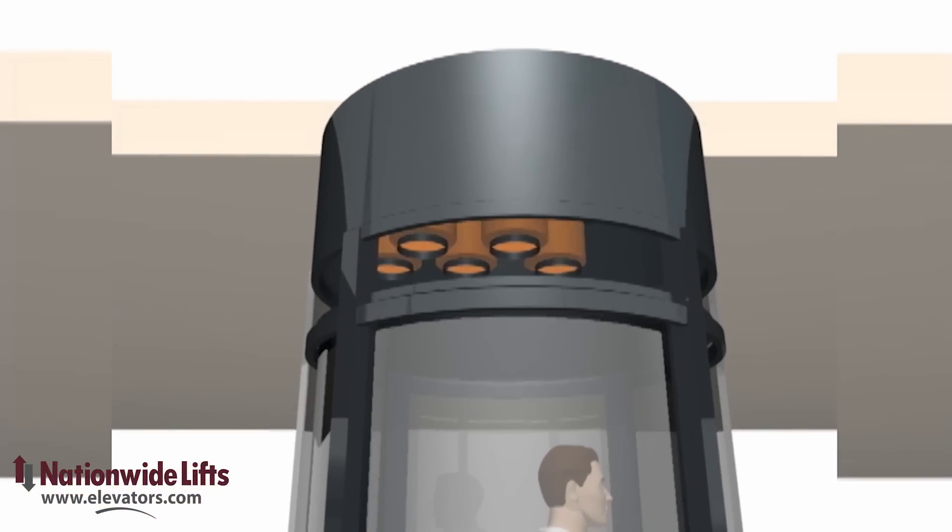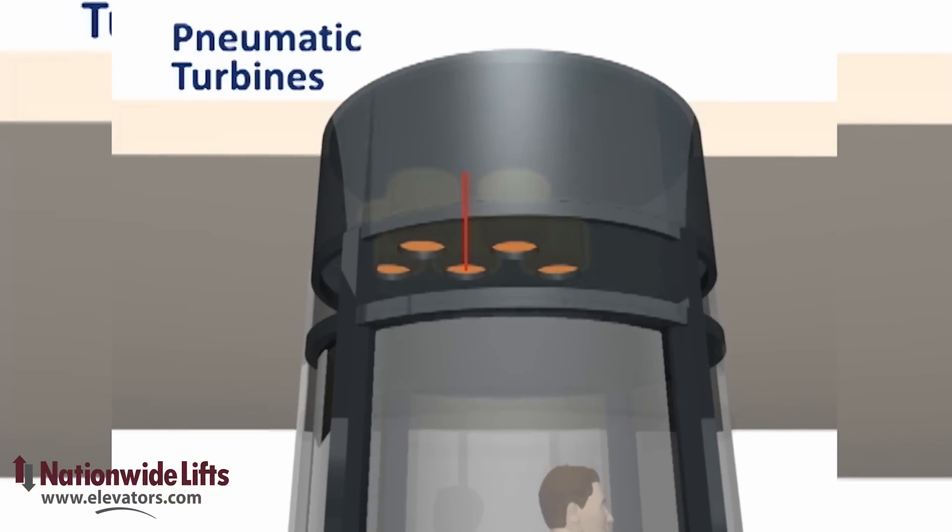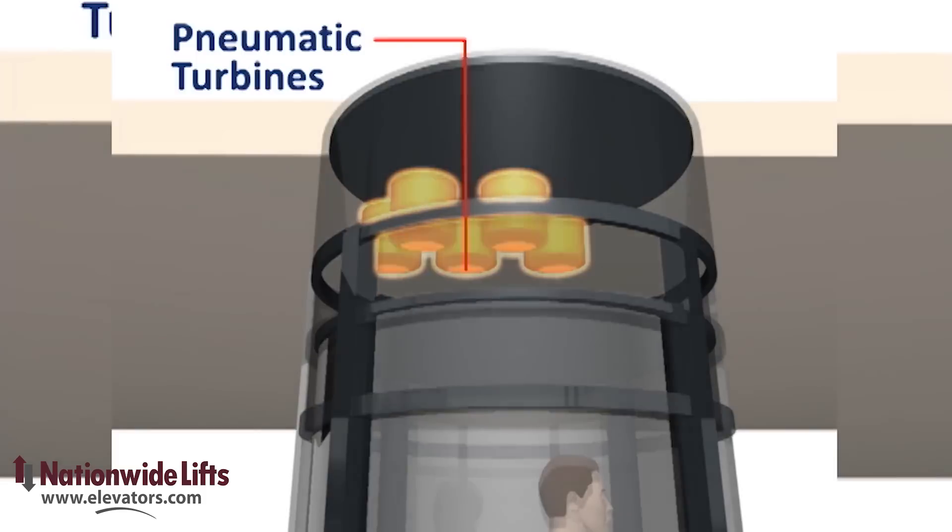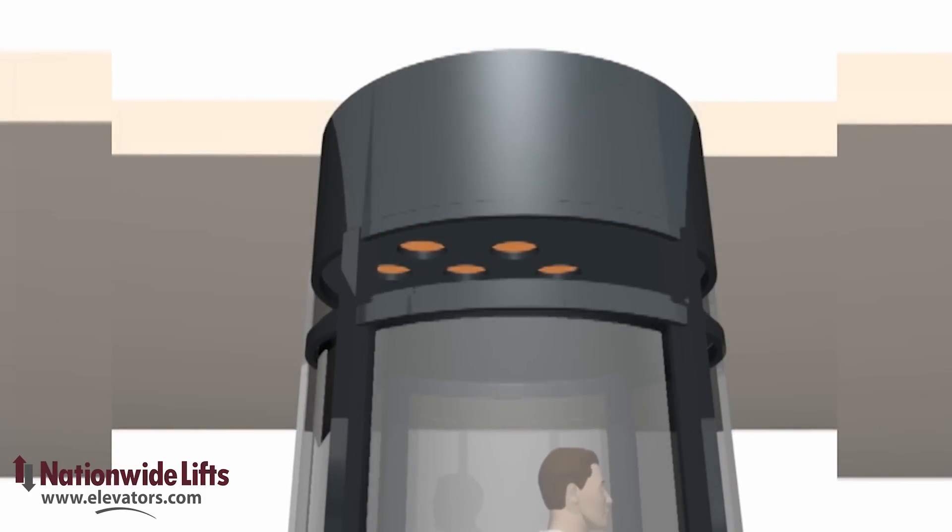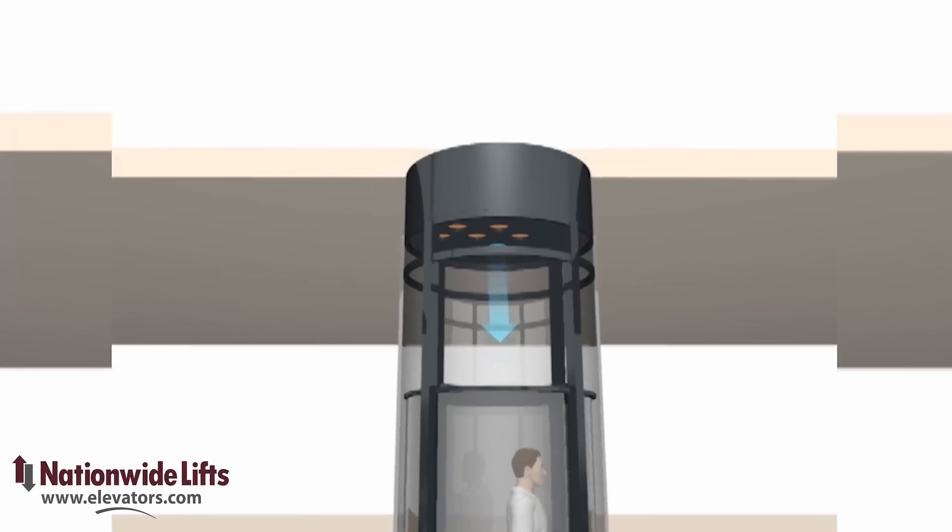Hidden in the top of the hoistway are multiple turbines. These turbines are responsible for removing the air from the hoistway to raise the cab. An electronic valve controls the air return into the hoistway.